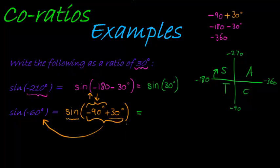Which quadrant is it? There is negative 90. Negative 90 plus 30 means I go in the negative direction 90 degrees, and in the positive direction 30 degrees. So I'm in the fourth quadrant.